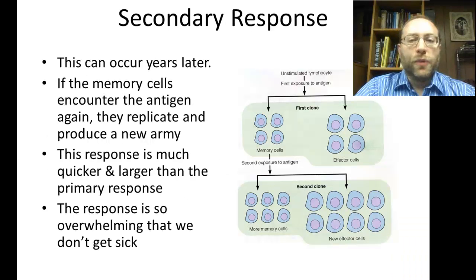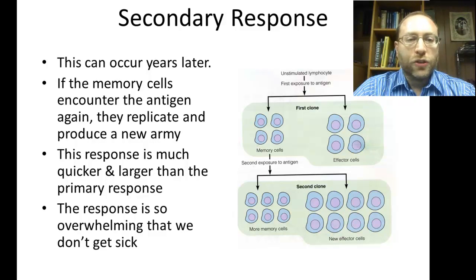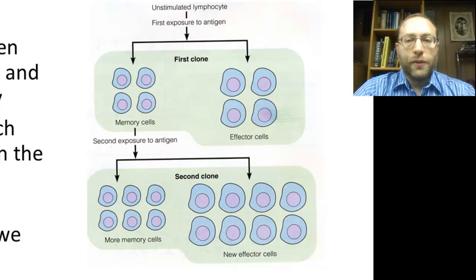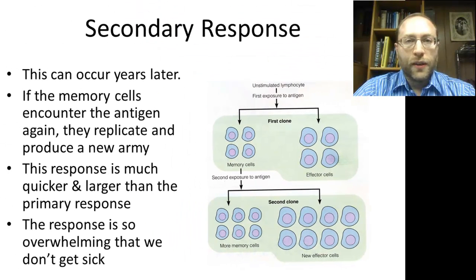The secondary response is what happens when you're immune. It can occur years later; you just need the memory cells, which live for decades. Rather than having just one or two cells available for the macrophages to find, you've got many memory cells available, so the response will be much quicker. These memory cells reproduce very quickly and produce a much larger army, quickly overwhelming the pathogen before you feel any symptoms whatsoever.